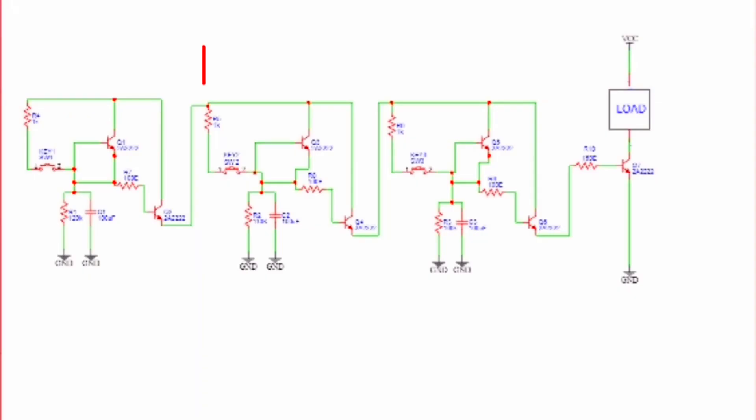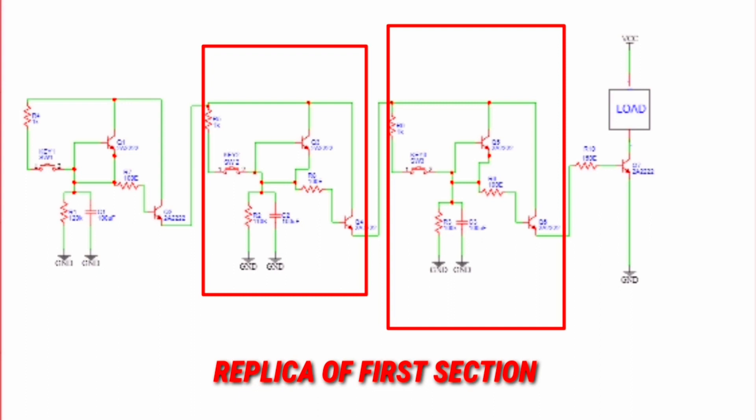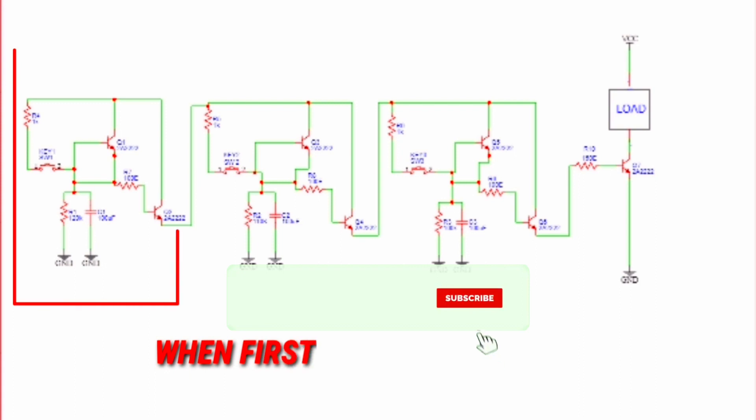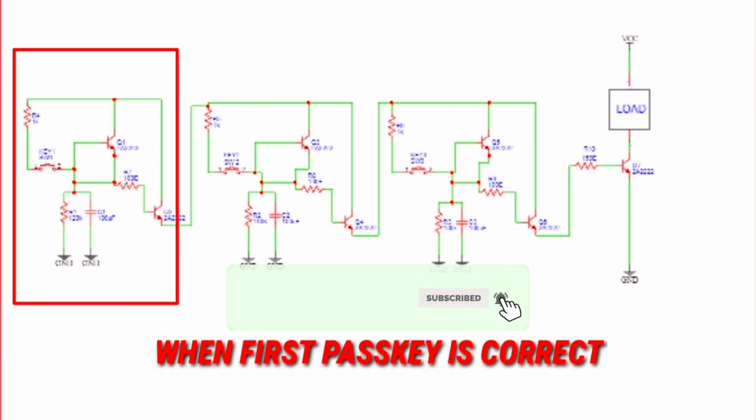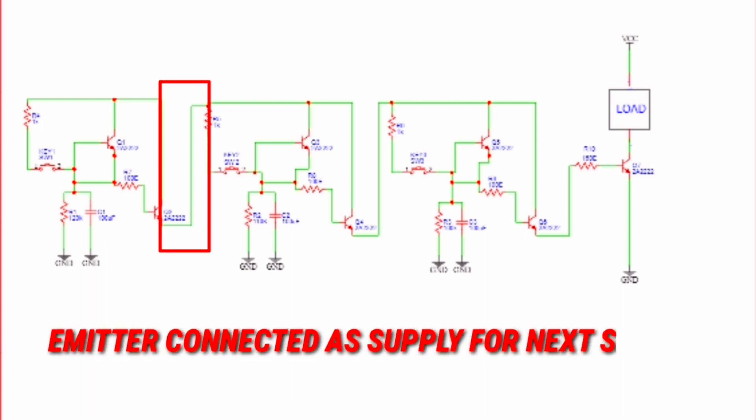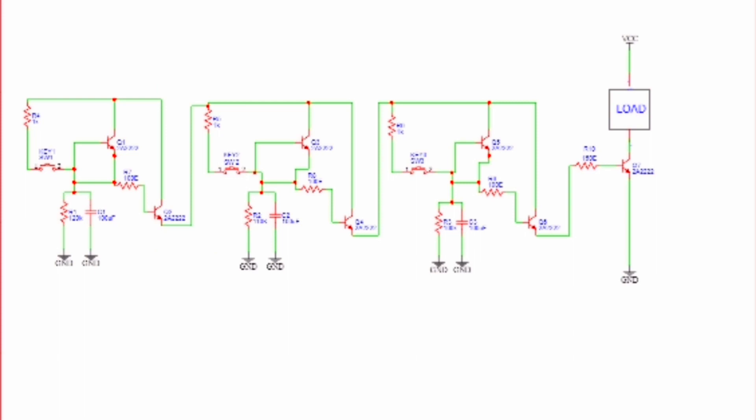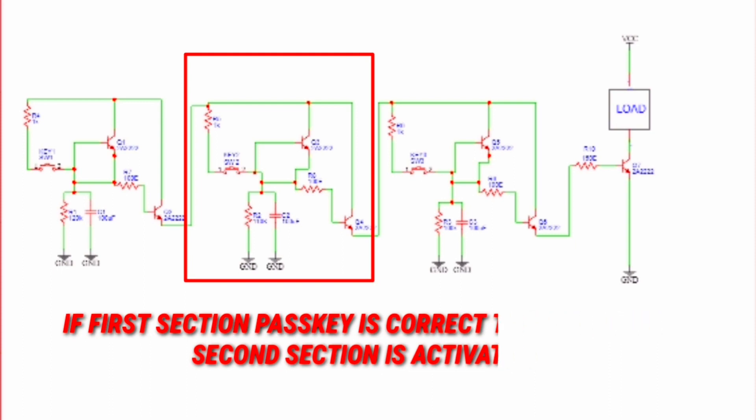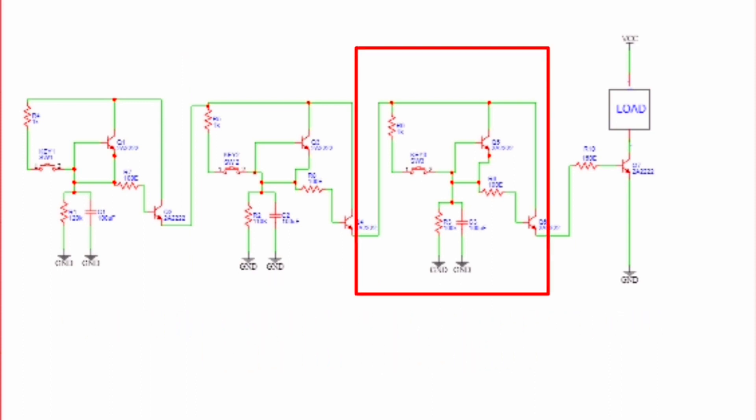And moving on to the second and the third section, they are basically the replica of first section, but one thing, they can only be operated when the first key or pass key is correct as the emitter of Q2 is connected as the supply for the transistors of the second section which means the supply can only be reached to the second section when the first section is on. And the third section is also similar which means when first section and second section are on then only the third section can be operated. So this is quite secure lock.